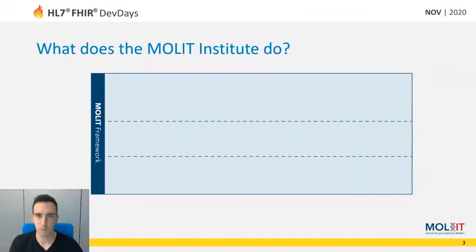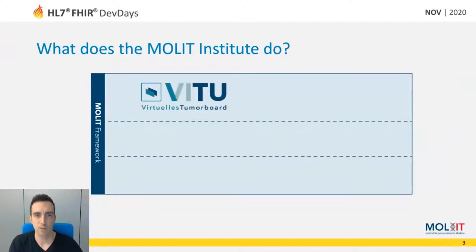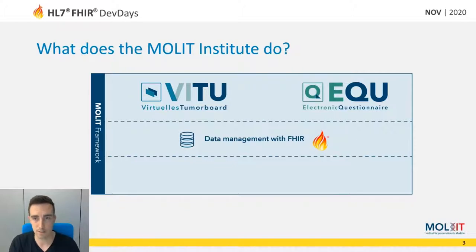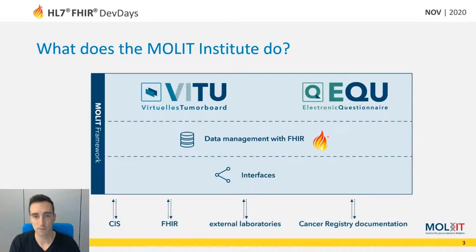So what do we do here at the Molit Institute? We provide a framework that consists of two main products: first, a software for virtual tumor boards, and secondly, an electronic questionnaire tool called EQ. They both have in common that the complete data management is handled in the FHIR format. They offer interfaces to various other sources such as clinical information systems, external laboratories, and local cancer registry documentation systems.